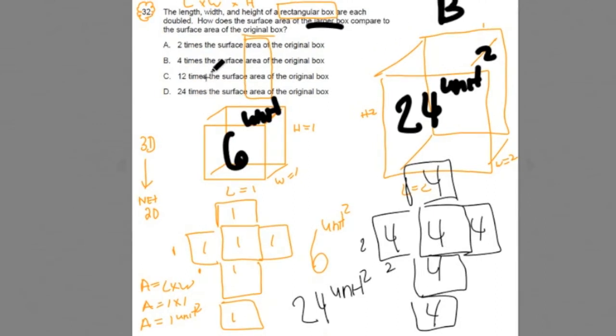And our original shape, collectively, the surface area is 6 units squared. And we're asked how much larger, when we're comparing the boxes, is the large one, I'll call the large one B, to the small one, I'll call that A. How much larger is it? Is it 2, 4, 12, or 24?